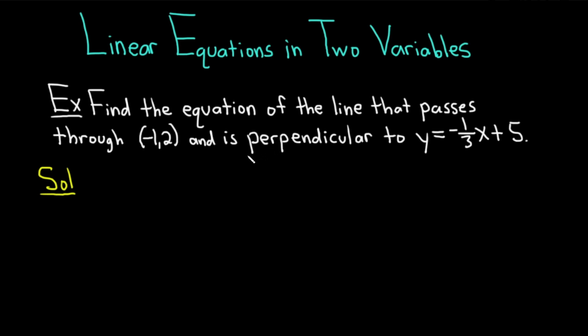We are told that our line is perpendicular to this line over here. The slope of this line is just -1/3 because it's in the form y = mx + b. You can see right away that m equals -1/3. However, our line is perpendicular to it.